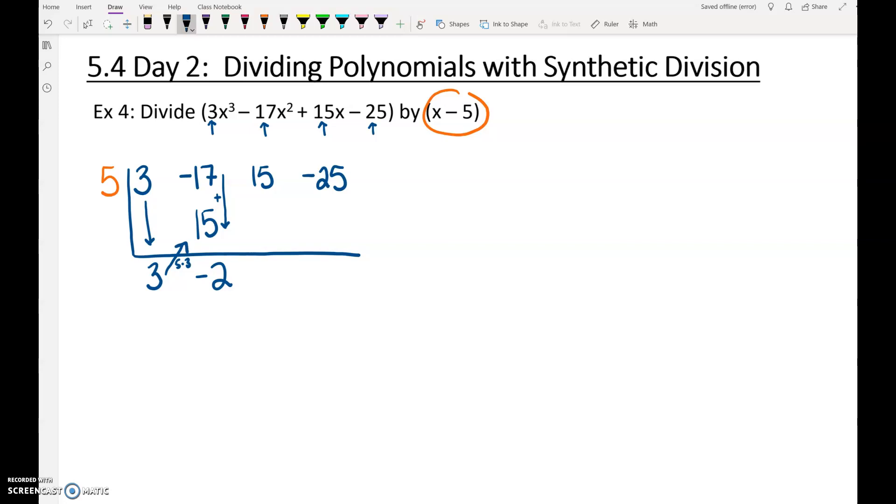Now let's do 5 times negative 2. What is 5 times negative 2? Negative 10. That goes here. We add those together. That gives us 5. And then we repeat. 5 times 5 is 25. And add negative 25 plus 25 is 0. Whatever number is in the last space, that is your remainder.